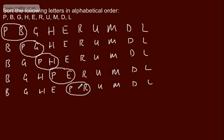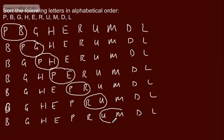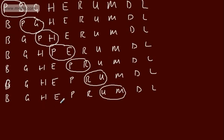P and R: P comes before R, so we're not swapping. R and U: not swapping. U and M: we are swapping these over. By the end of the first pass, U is going to end up at the end in its correct position, as it's the letter furthest into the alphabet. List so far: B, G, H, E, P, R, M, U, D, L.